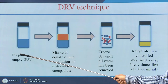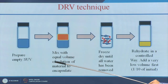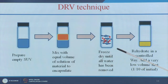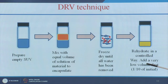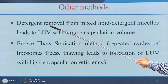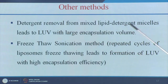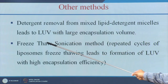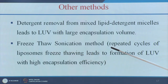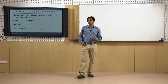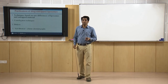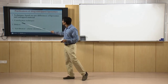In the DRV technique, empty SUVs are mixed with an equal volume of the material to be encapsulated and freeze-dried until all water is removed. Rehydration with 1/10 volume of water gives small SUV particles with loaded drug. Other methods include detergent removal from mixed lipid-detergent micelles, yielding LUVs with large encapsulation volume, and the freeze-thaw sonication method, which uses repeated freeze-thaw cycles to form LUVs with high encapsulation efficiency. After loading, liposomes are purified by centrifugation, dialysis, or gel filtration.